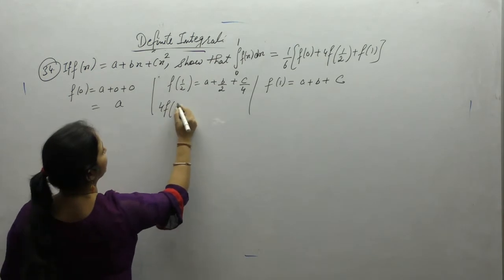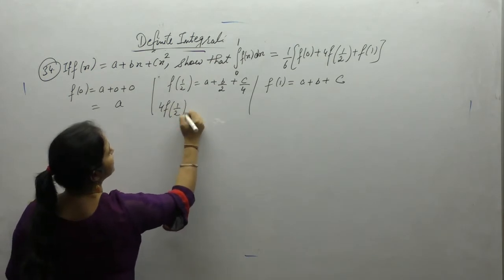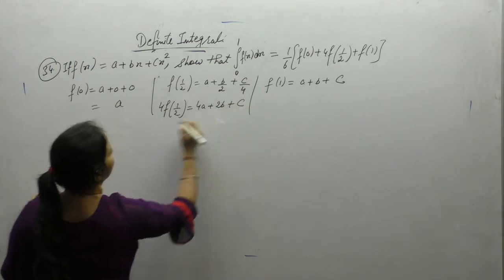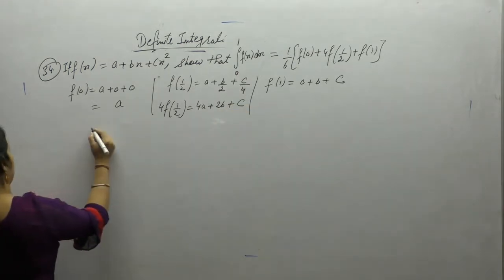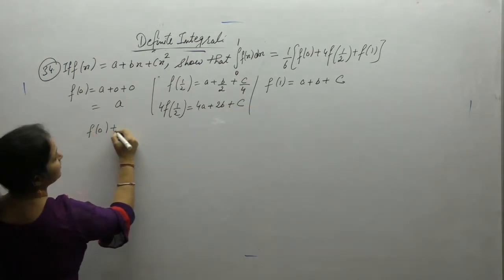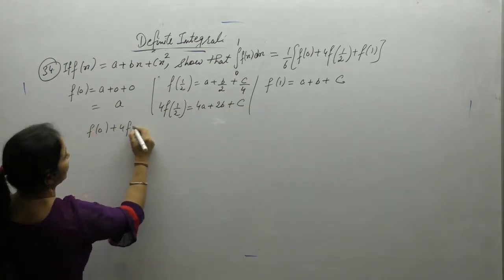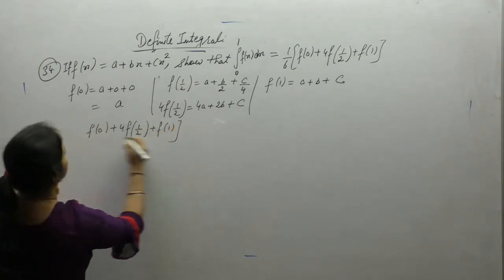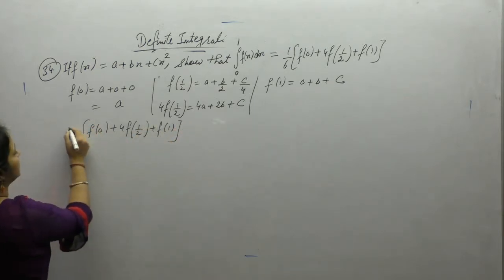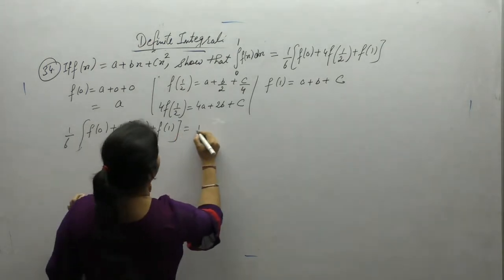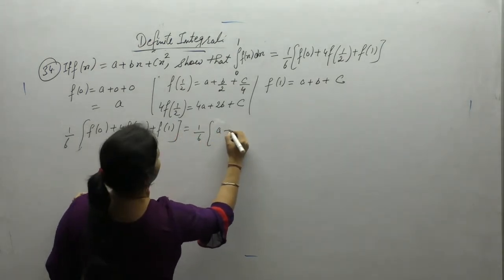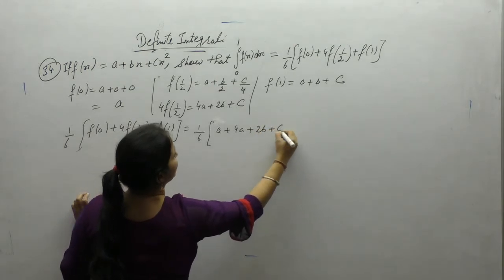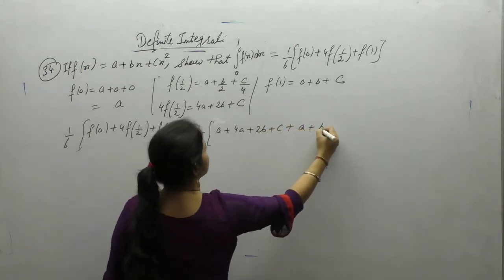4 times f(1/2) = 4a + 2b + c. So f(0) + 4f(1/2) + f(1) equals 1/6 times [a + (4a + 2b + c) + (a + b + c)], which simplifies to 1/6 times (6a + 3b + 2c).